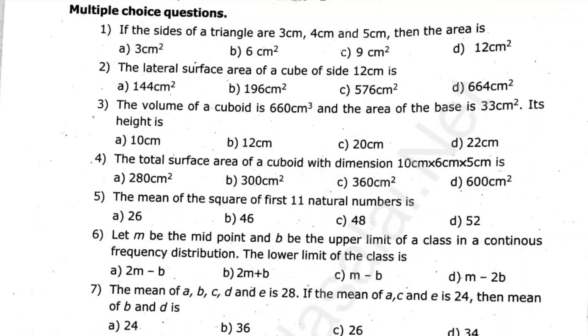7. The mean of a, b, c, d and e is 28. If the mean of a, c and e is 24, then the mean of b and d is dash. It is very simple.